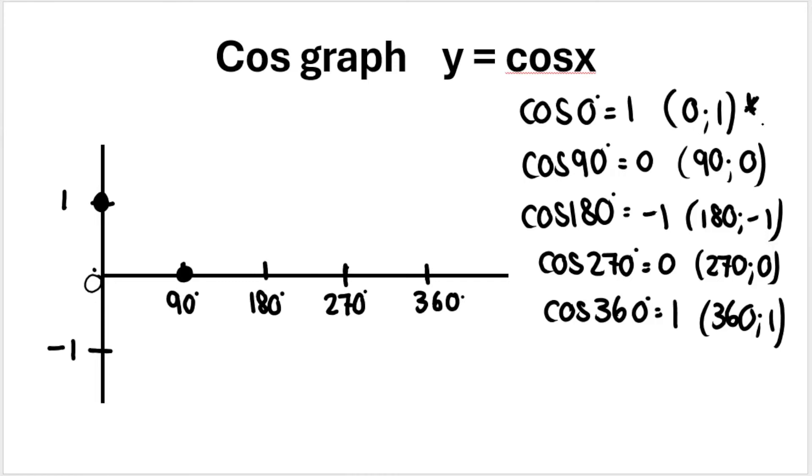So it essentially gives me all of these coordinates over here which I can plot on the graph. Remember your x's are these values over here: zero, 90, 180. So these are all your x values, and then when you type it into the equation you get your y values, which is going to be on the y-axis. So we've already plotted this one, we've plotted cos 90, cos 180 is equal to negative one, cos of 270 is equal to zero, cos of 360 is equal to one.